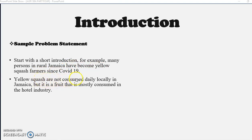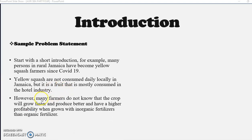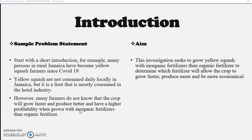Yellow squash are not consumed daily locally in Jamaica, but it is a fruit vegetable that is mostly consumed in the hotel industry. However, many farmers do not know that the crop will grow faster and produce better and even have a higher profitability when grown with inorganic fertilizer than organic fertilizer.